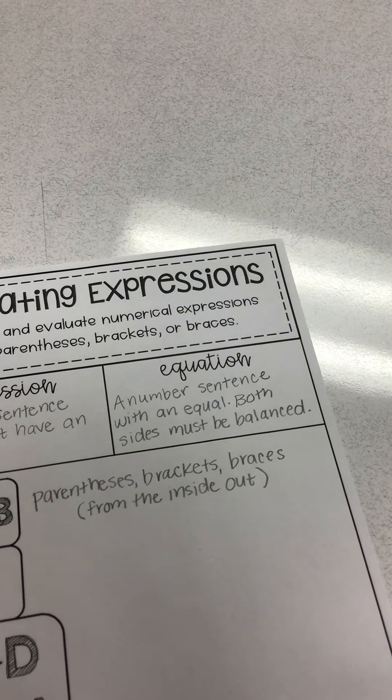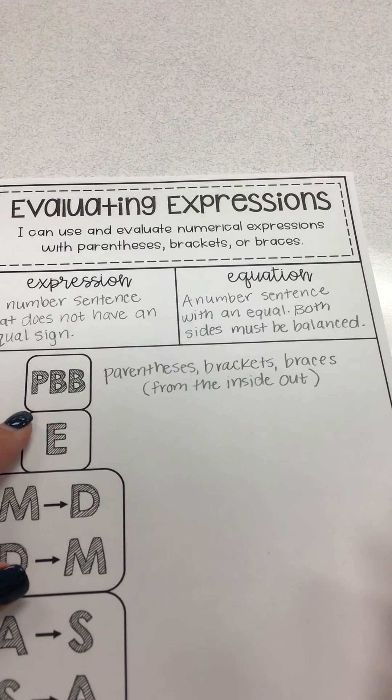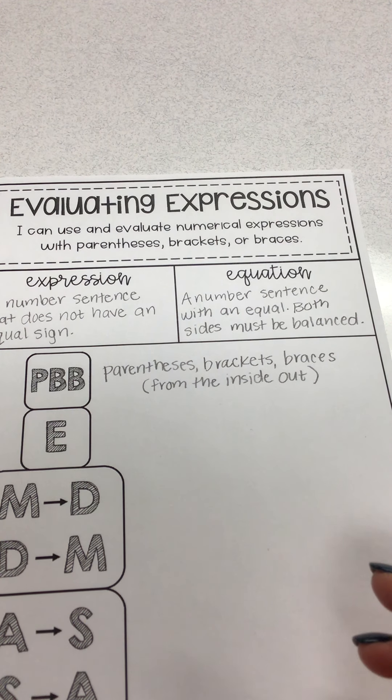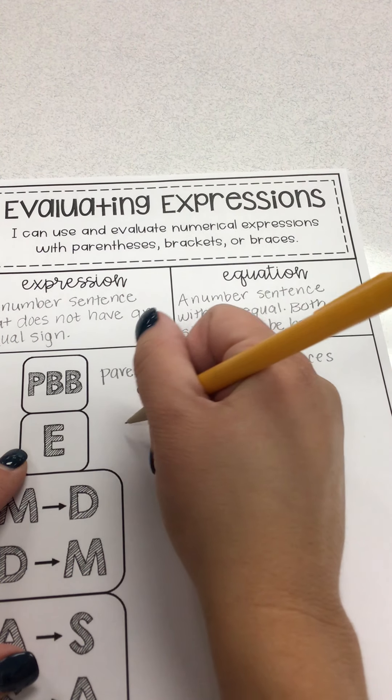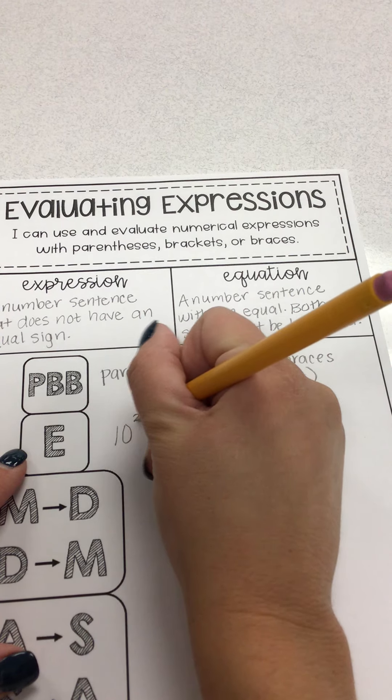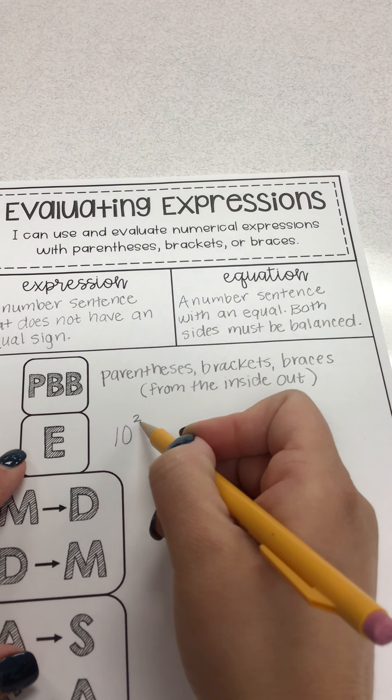E is exponents, which in fifth grade we don't really do a whole lot of order of operations with exponents, but remember that's the little symbol, that's the exponent.